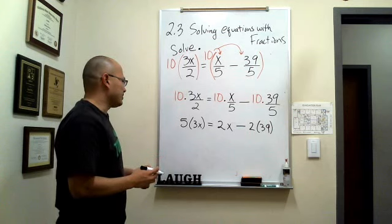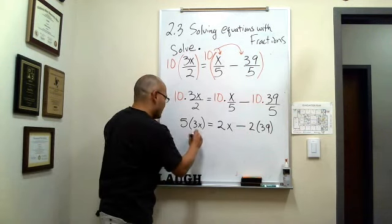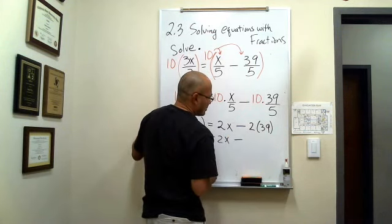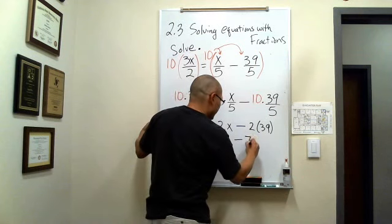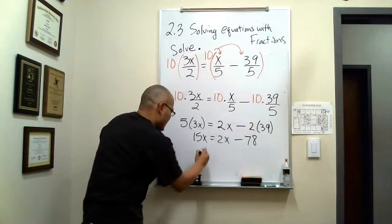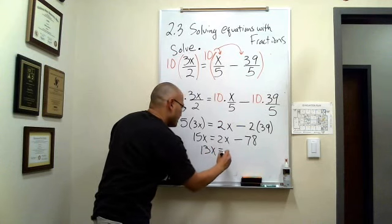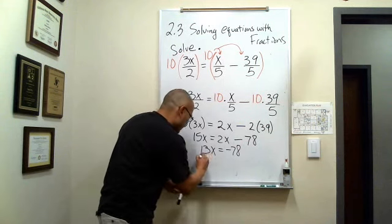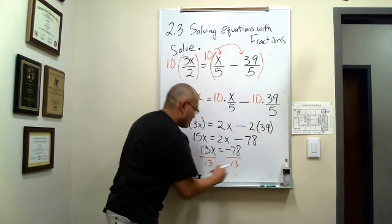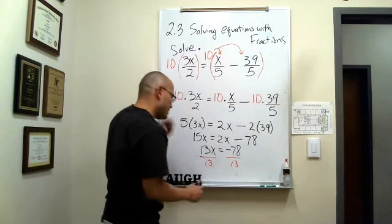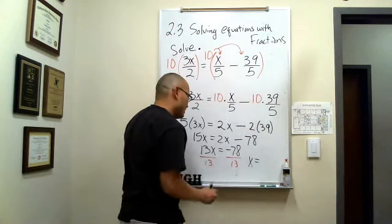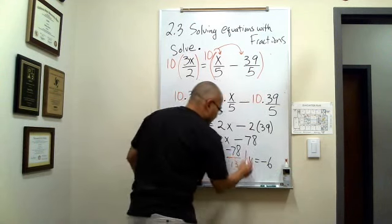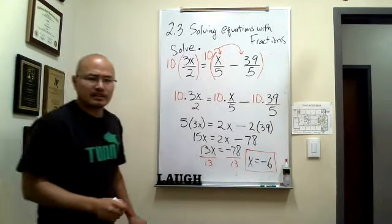From here you can finish the equation. This gives 15x is equal to 2x minus 78, so 13x is equal to negative 78. Divide both sides by 13 and you get the final equation: x is equal to negative 6. So in this case, your final answer is the equation x equals negative 6.